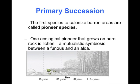The first species to colonize a barren area are called pioneer species. One ecological pioneer that grows on bare rock is called a lichen. It's a mutual symbiosis between a fungus and an algae. These two things work together; they can actually break down the rock. They're able to fix their own nitrogen, and they slowly over time will break that rock down using some of the byproducts they produce. In the picture at the bottom, I've highlighted only the lichens that are there to show you that pioneer species.